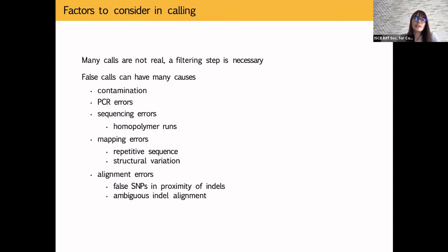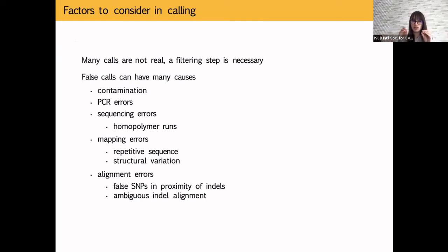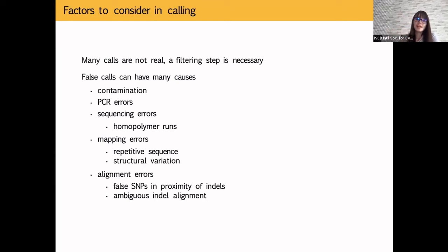There are several factors causing false positive calls. Contamination can produce three or four alleles at a site where you expect only two. PCR errors and sequencing errors — such as errors in homopolymer runs — can cause false calls. Mapping errors occur in repetitive regions or around structural variation. Alignment errors around indels are particularly problematic and create loads of false positives, as discussed earlier.